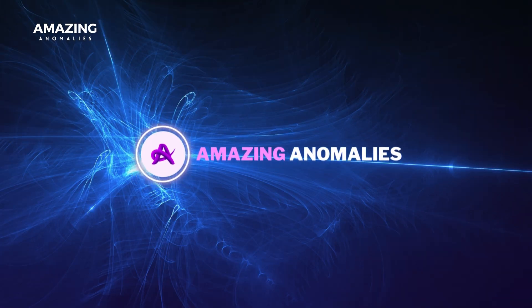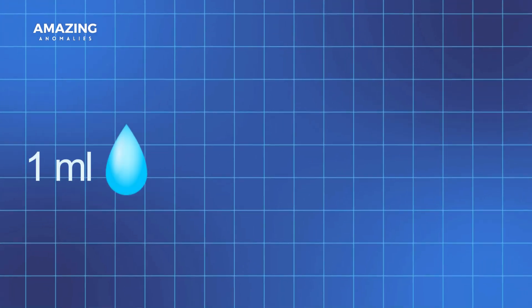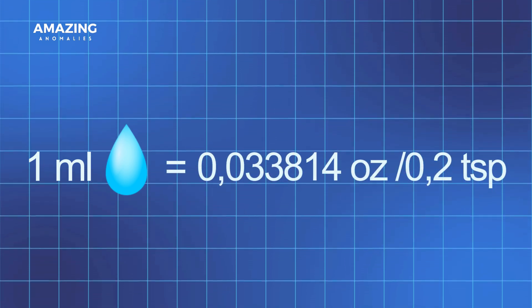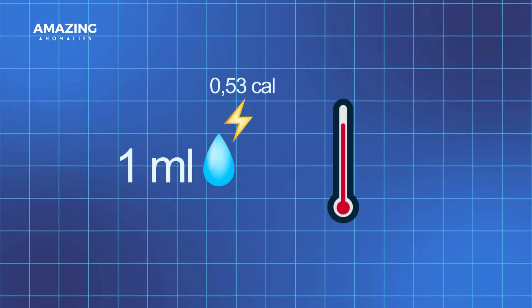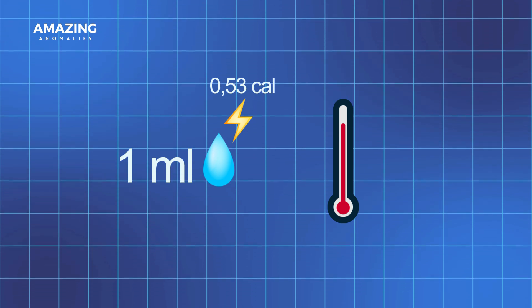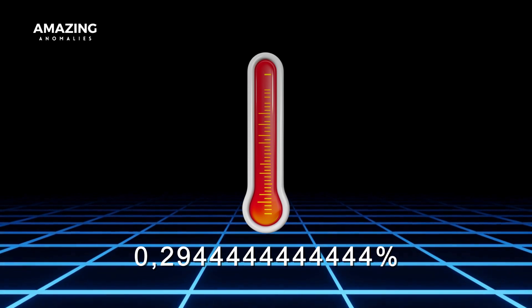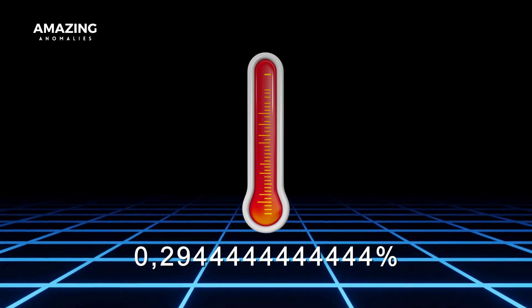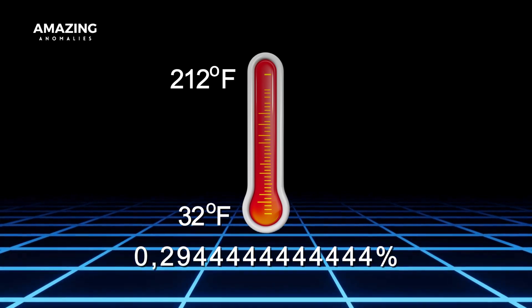So why is the United States the exception? Welcome to Amazing Anomalies! An American wouldn't understand what you just said if you had to explain it. One milliliter of water would be 0.03381 fluid ounces or 0.2 teaspoons. It takes 0.53 small calories of energy to raise its temperature by one degree Fahrenheit, corresponding to a change of 0.294% between the freezing and boiling points of water, from 32 degrees Fahrenheit to 212 degrees Fahrenheit.